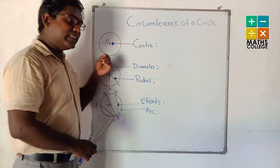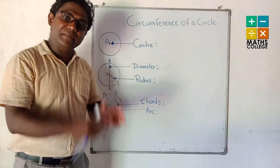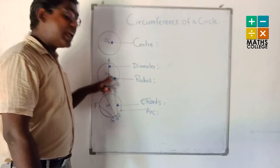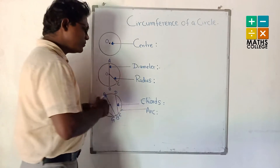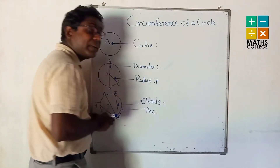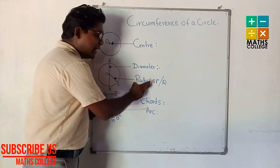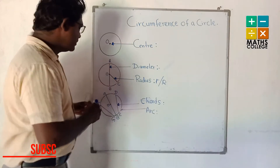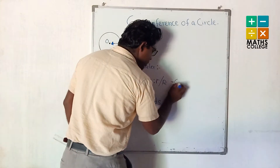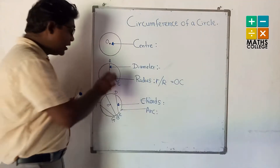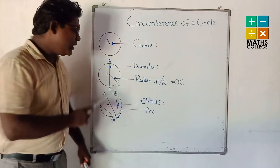Next, you can see radius. Radius means the straight line joining the center and any point of the circle — we call it radius. We can name it simply r or capital R. We can name this line as OC accordingly in the figure.